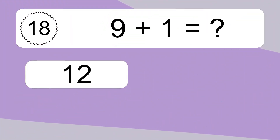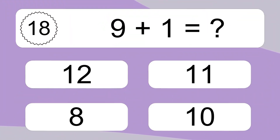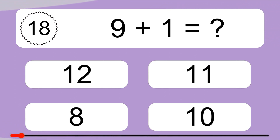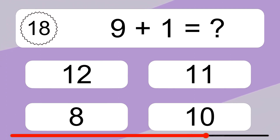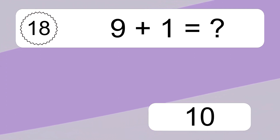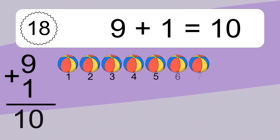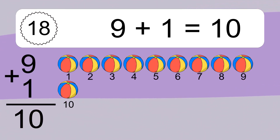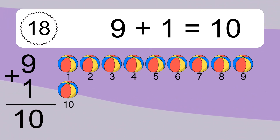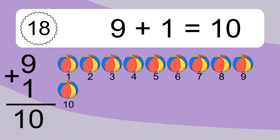Nine plus one equals what? Nine plus one equals ten. Let's count it: one, two, three, four, five, six, seven, eight, nine, ten.